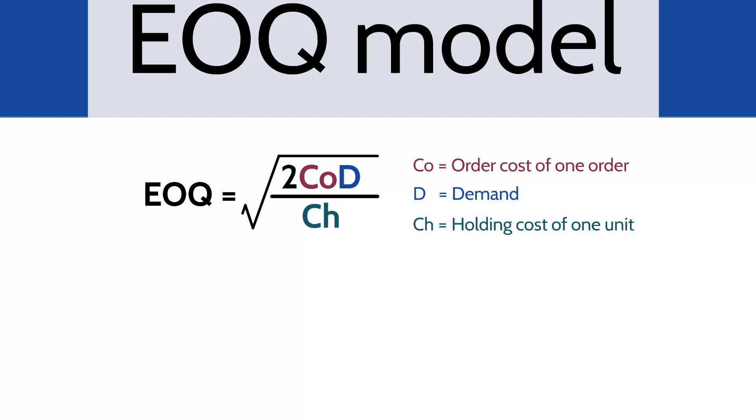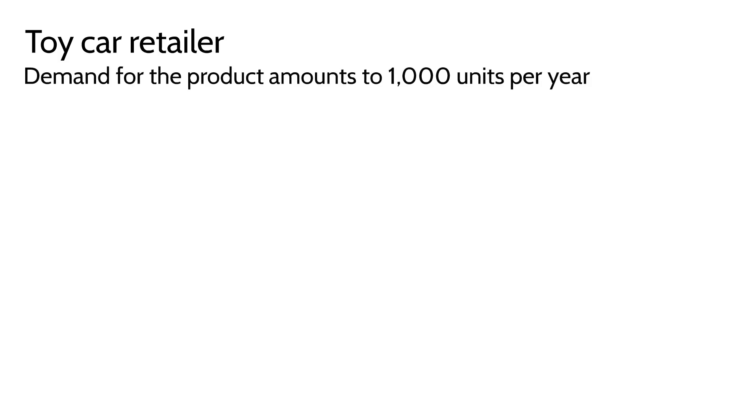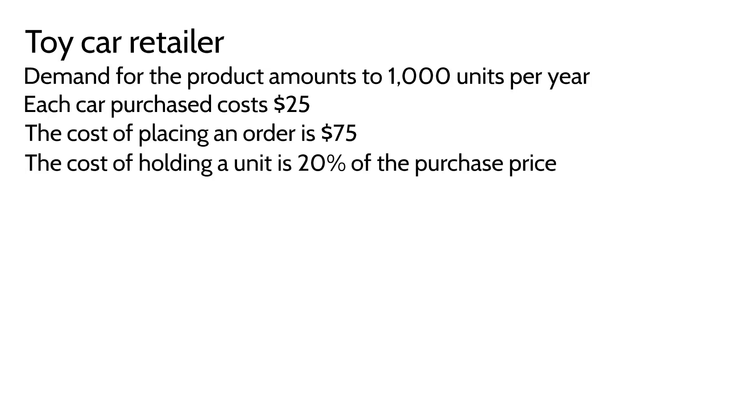Instead of a toy car manufacturer where we make cars, we're instead going to imagine that we're a toy car retailer. So now we're the one that actually purchasing the cars from the manufacturer. The first piece of information we're going to need concerns our demand. We know that we have a demand of roughly around a thousand units per year for our toy cars. Each car we purchase costs individually $25. The cost of placing an order is $75. And then lastly the cost of holding one unit is 20% of the purchase price. So in this case the car that is purchased at $25, the holding cost is 20% of that $25 figure.